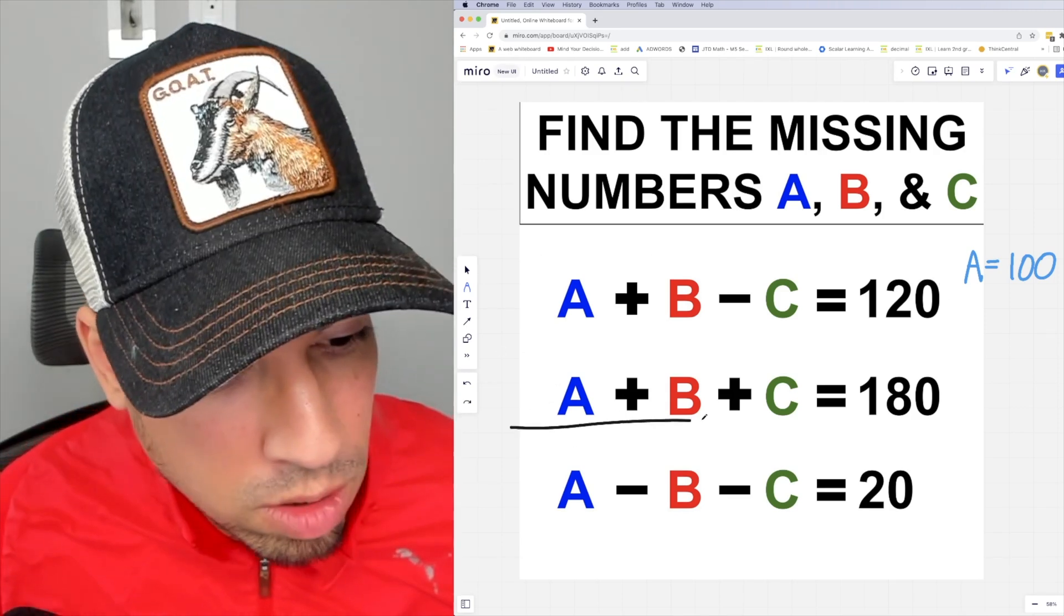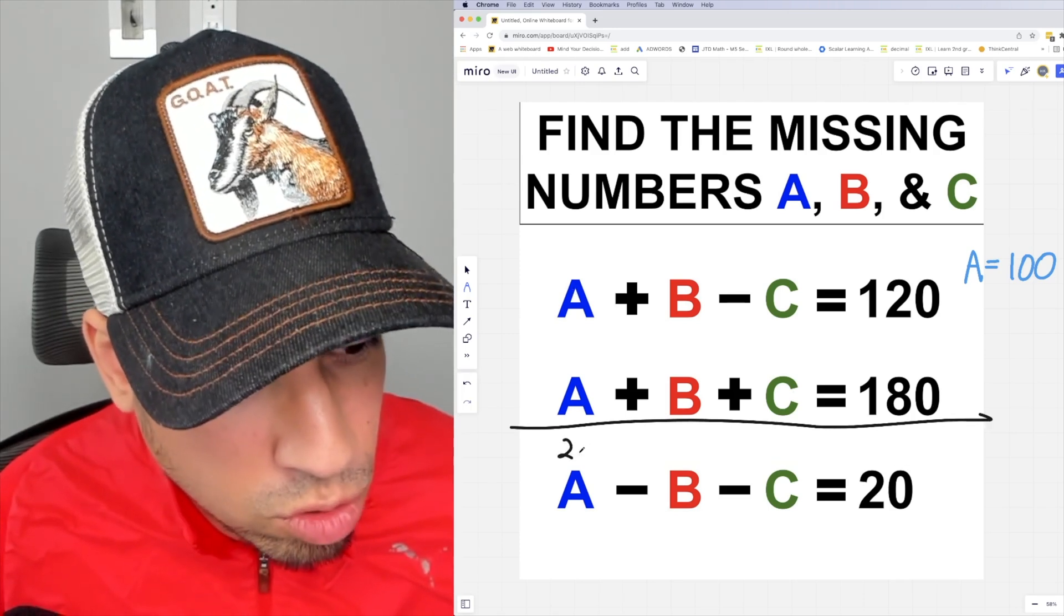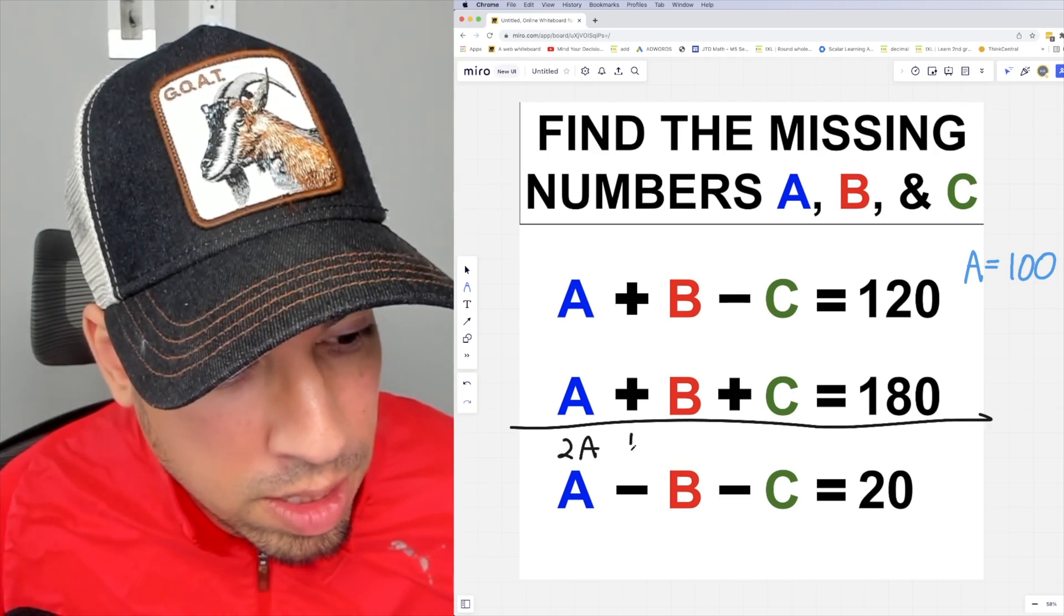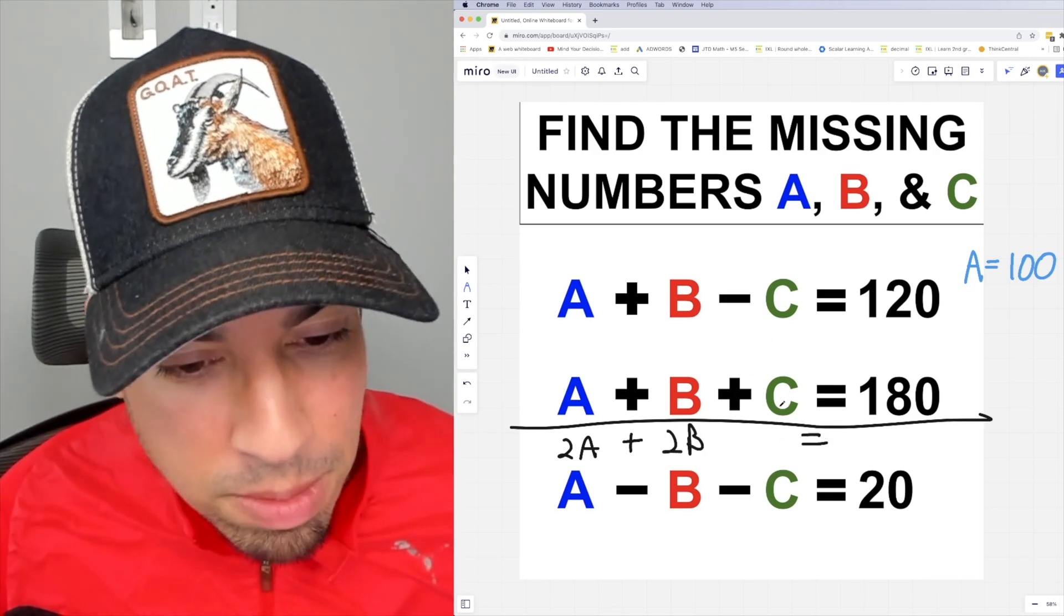Now I can look at these two equations right here and combine them likewise. So if I draw a little line like this, I can add them top down. So A plus A is 2A, B plus B is 2B, and then the C's cancel out because it's negative C and positive C.